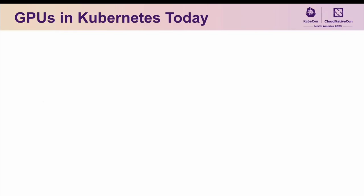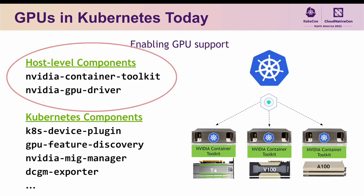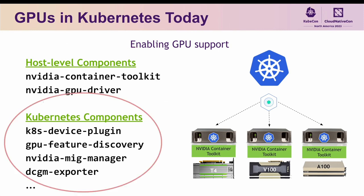So what does GPU support in Kubernetes look like today? Well, it requires a mix of host-level components as well as Kubernetes-specific components to be deployed on each node of a cluster that contains GPUs, where the host components consist of the NVIDIA Container Toolkit and the GPU driver itself, and the Kubernetes-specific components consist of those shown here, where the k8s device plugin is the one that ultimately makes the GPUs themselves visible to Kubernetes.